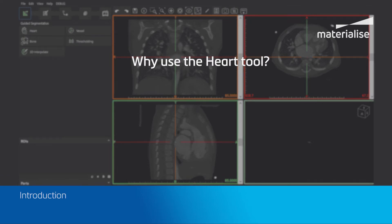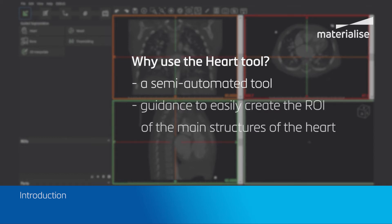The HART tool is a semi-automatic and user-friendly tool that guides you through a number of smaller steps to easily create regions of interest of the main structures of the heart: the atria, the ventricles, and the greater vessels.